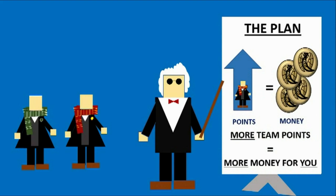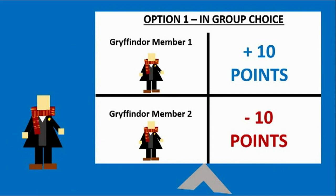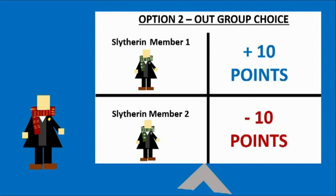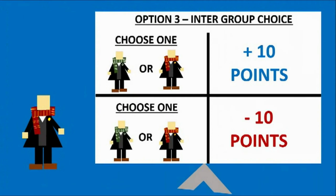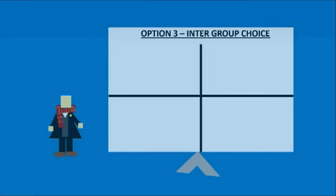The boys were given three options for how they would allocate points. They could choose option one and allocate both positive and negative points to their own group member — this is known as the in-group choice. Or they could choose option two and allocate both positive and negative points to members of the other group — this is known as the out-group choice. Or they could go with option three, choosing one random person from their own group and another from the other group, assigning one positive points and the other negative points — entirely up to them. If the boys chose to allocate positive points to their own group member and negative points to the other group member, it would be clear that discrimination had taken place.